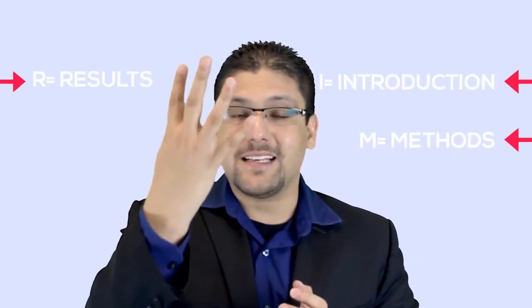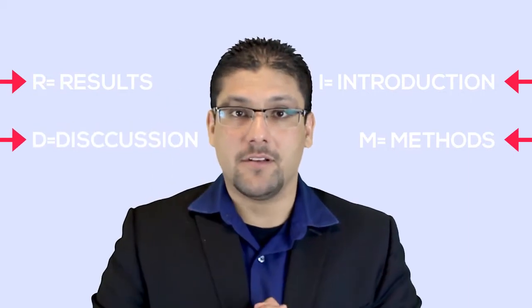Now let's move to the most commonly used abstract: the informative abstract. The informative abstract is the full, complete abstract with every component. The components follow the same IMRAD format — I for introduction, M for method, R for results, and D for discussion. So here you will have the introduction (your background or objective), the method, the results, and some part of the discussion or conclusion. This is a complete informative abstract.